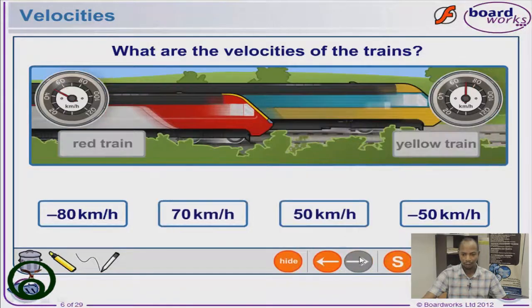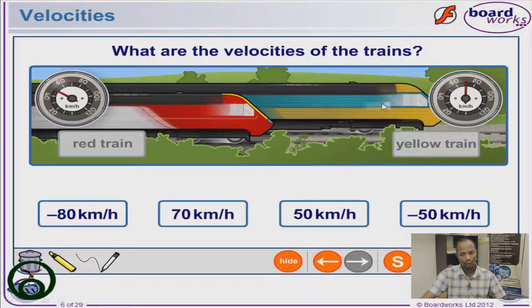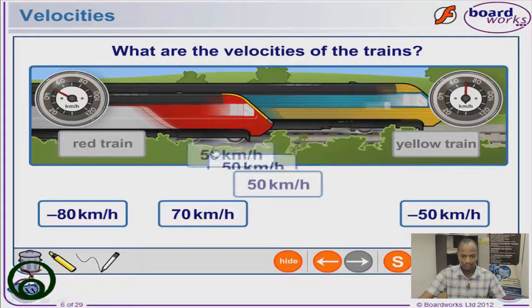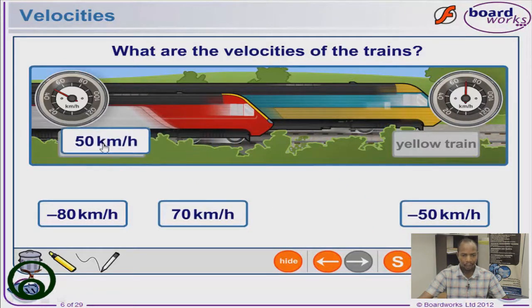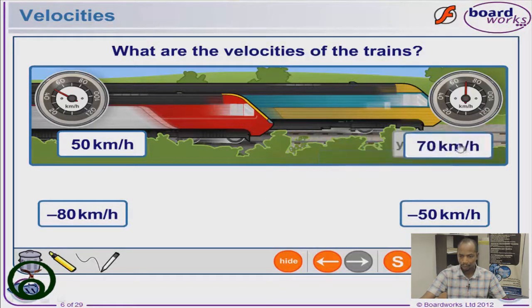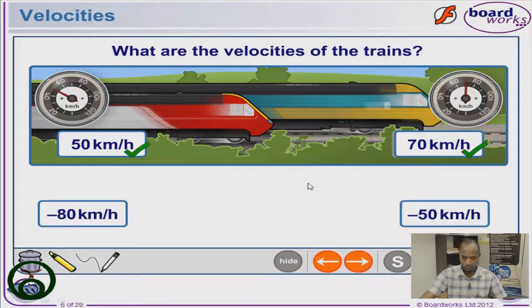Now let's look at another scenario where both trains are going towards the same direction — towards the right. Train A has a speedometer reading of 50 kilometers per hour and it's going right, so it's positive. Train B is also going towards the right, so it's also positive, with a speedometer showing 70 kilometers per hour. We match the values and confirm our understanding.